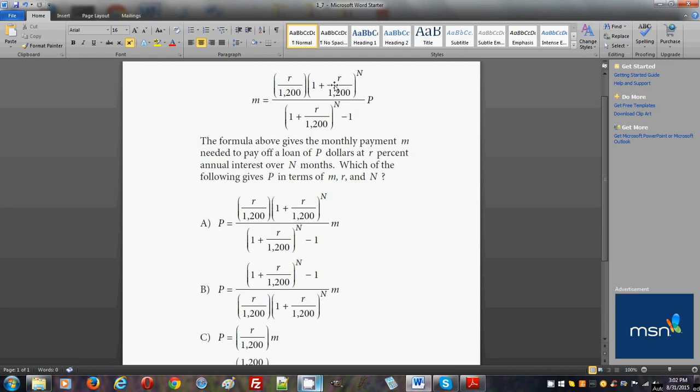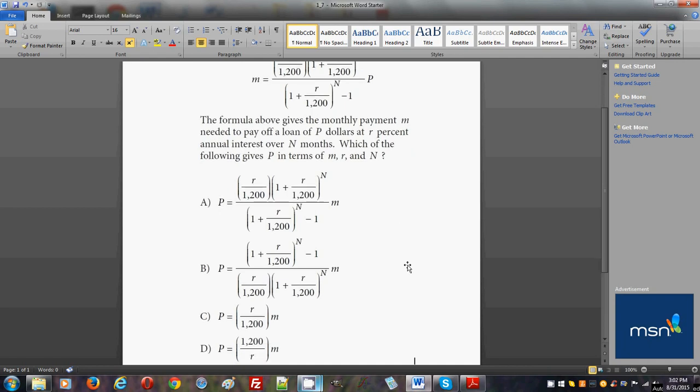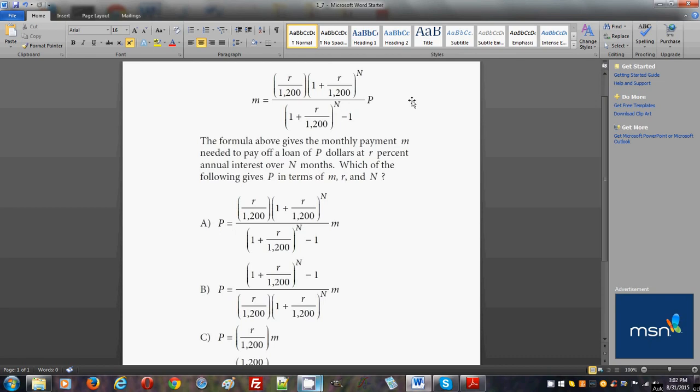Let's find that. P will be equal to m times this denominator because we got rid of it, and will be divided by this numerator because we needed to have p by itself, which is what the question asks.